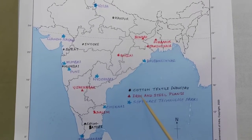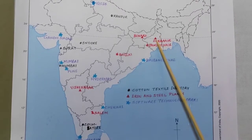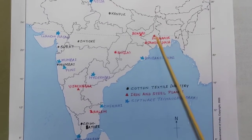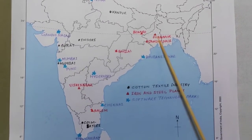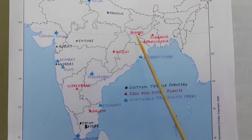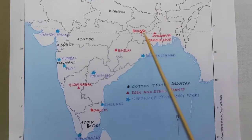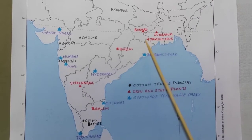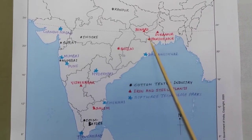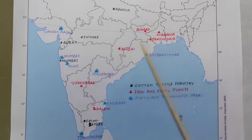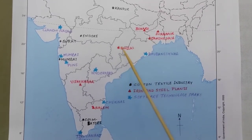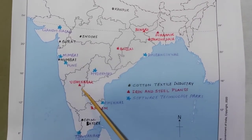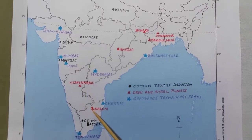Next we deal with iron and steel plants. First, look at West Bengal — from wherever the Tropic of Cancer is passing, towards the centre of that line mark Durgapur steel plant. Then in Jharkhand, towards the easternmost part but above the Tropic of Cancer, mark Bokaro iron and steel plant. And Jamshedpur, again in Jharkhand but towards the southern tip. Bhilai in Chhattisgarh towards the centremost part. Then we come to Karnataka: Vijayanagar iron and steel plant, and then Tamil Nadu's Salem steel plant.